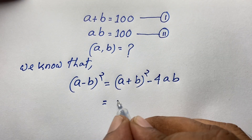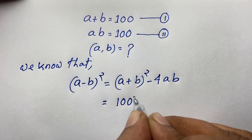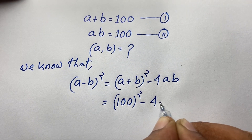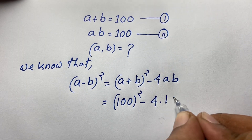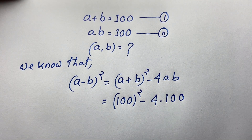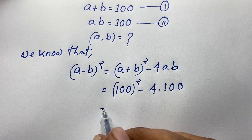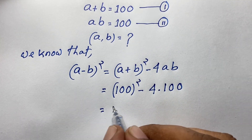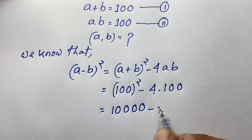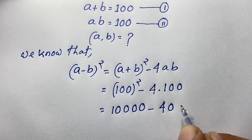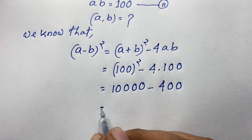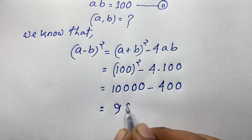a plus b is equal to 100, so I take 100 whole to the power 2, minus 4 times ab where ab is 100. So 100 squared is 10,000 minus 4 times 100 which is 400. This minus that gives us 9,600.